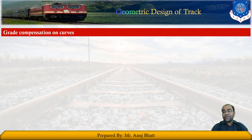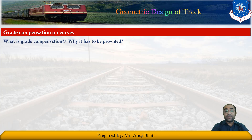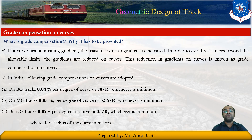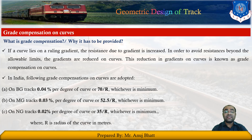Now let us discuss grade compensation on curves. The ruling gradient is the maximum gradient provided on a particular section, and when a curve lies on that gradient, it increases resistance at that location. In order to avoid resistance beyond allowable limits, the gradient is reduced on curves, and this type of reduction is called grade compensation.